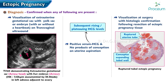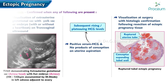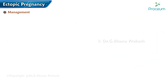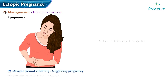Diagnosis is also confirmed by visualization at surgery with histologic confirmation following resection of ectopic tissue. Unruptured ectopic symptoms: presence of delayed period or spotting with features suggestive of pregnancy, and uneasiness on one side of the flank, continuous or at times colicky in nature.